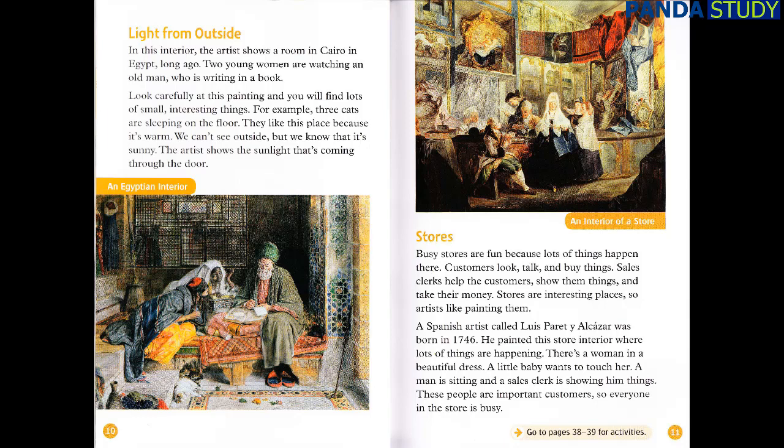Light from Outside. In this interior, the artist shows a room in Cairo in Egypt long ago. Two young women are watching an old man who is writing in a book. Look carefully at this painting and you will find lots of small, interesting things. For example, three cats are sleeping on the floor. They like this place because it's warm. We can't see outside, but we know that it's sunny. The artist shows the sunlight that's coming through the door.